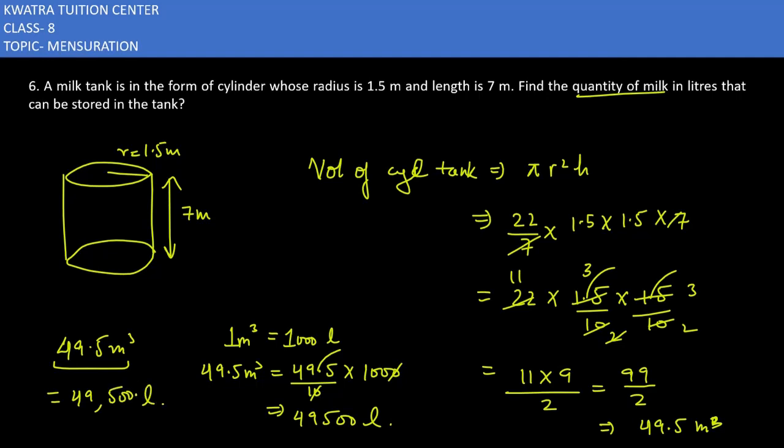The conversion is done and the answer is coming out to be 49,500 liters. We had to convert our answer to liters. We knew how to find the volume of a cylinder. Our task was that you have to convert it in terms of liters. So yes, this is how you will convert it. Now let's start with the next one, which is the seventh question.